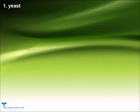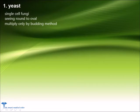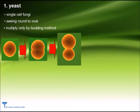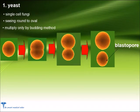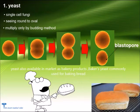Number 1: Yeast. Yeast are single cell fungi. In microscope they appear round to oval. They multiply only by budding method; a budding yeast cell is known as a blastopore. Yeast is found in a number of different forms. Yeast is also available in the market as bakery products; baker's yeast is commonly used for baking bread.